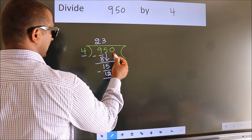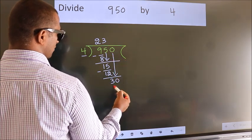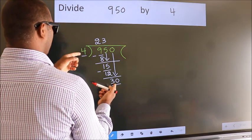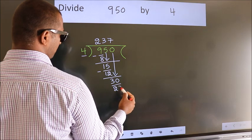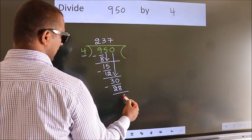After this, bring down the beside number. So, 0 down, giving us 30. A number close to 30 in the 4 table is 4 times 7 equals 28. Now, we subtract. We get 2.